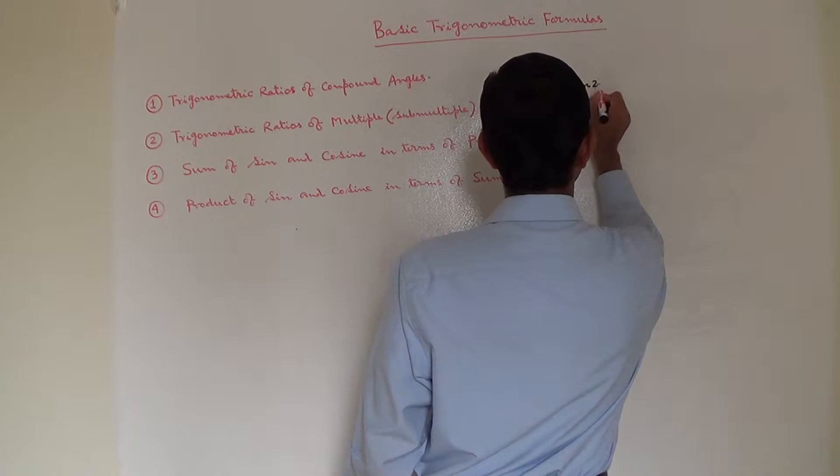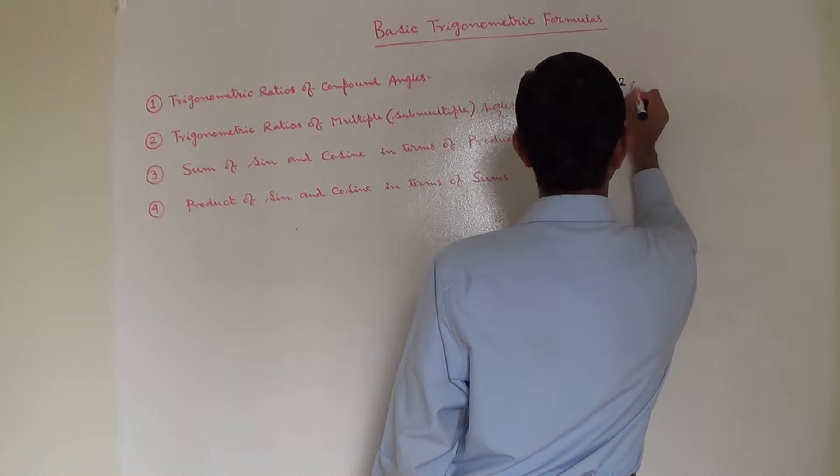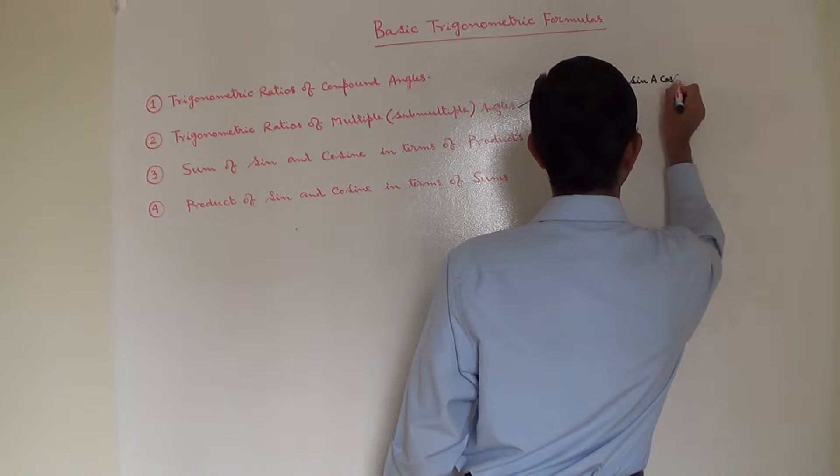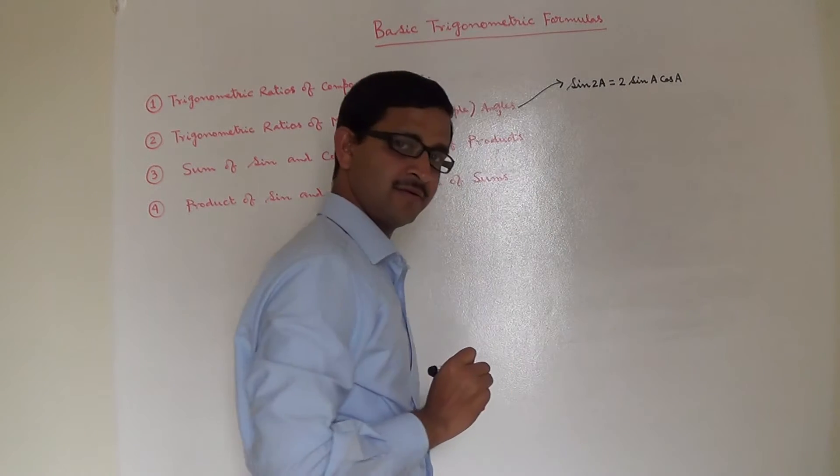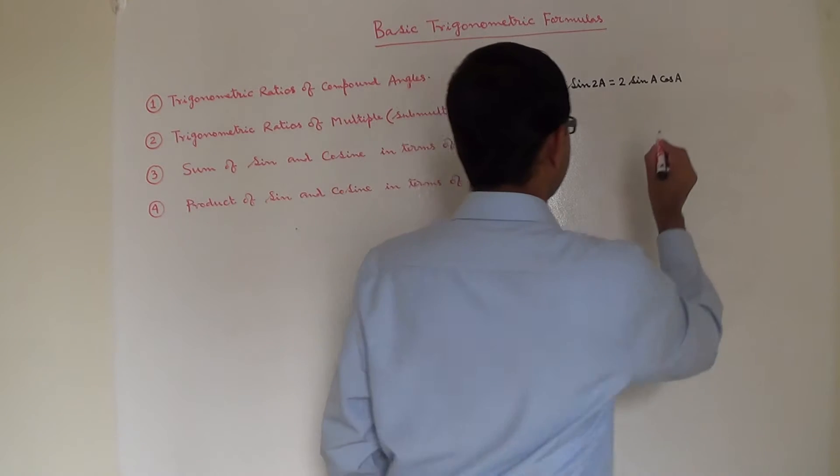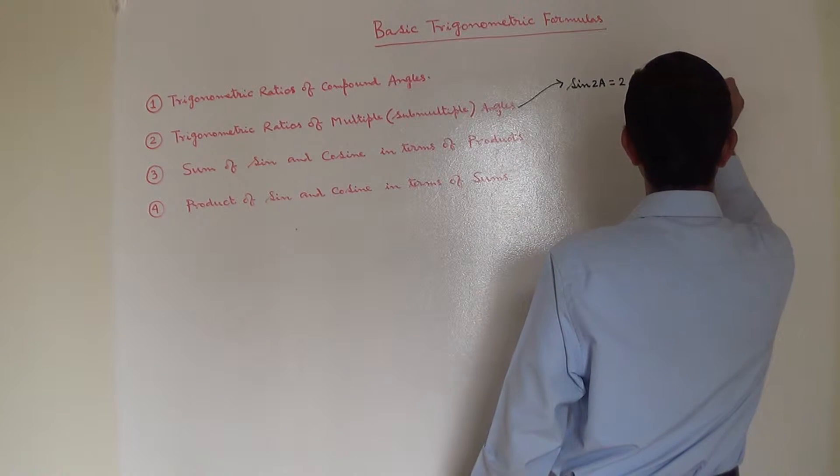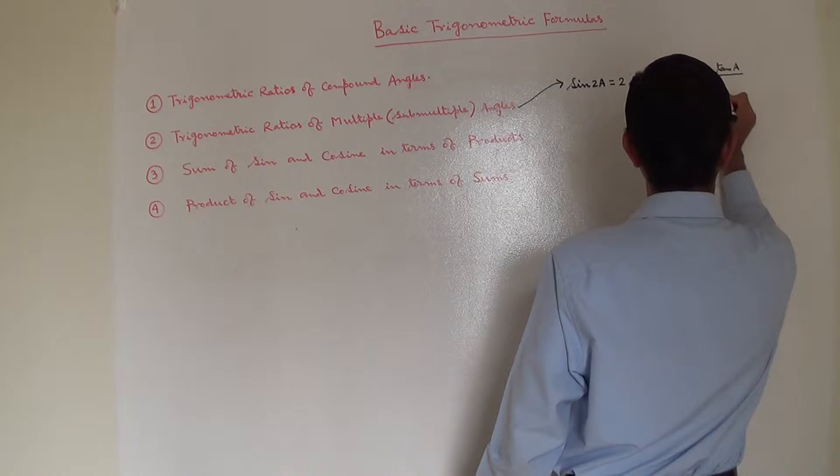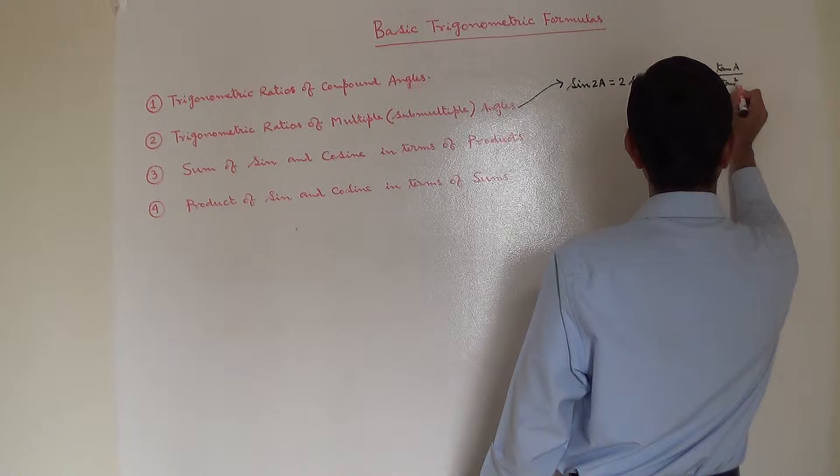Sin 2A is equal to 2 sin A cos A. That also can be written as 2 tan A divided by 1 plus tan square A.